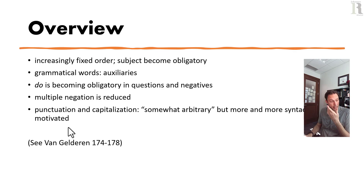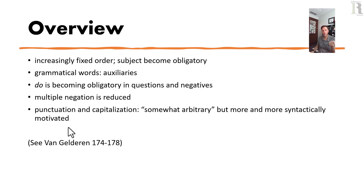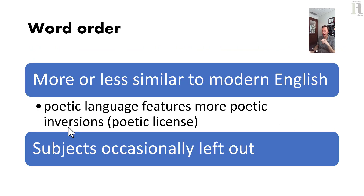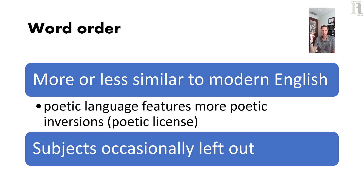All of this can be found in Ellie van Gelderen's History of the English Language, pages 174 to 178 in chapter 6. Word order is more or less similar to modern English. When you're reading Shakespeare's literature, especially poetry, the word order is more free — you get inversion. This freedom with syntax in poetry is called poetic license: literally a license to adjust grammar a little.